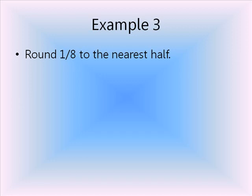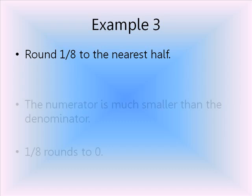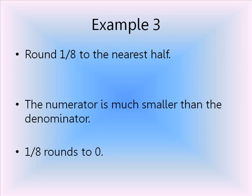Finally, let's round 1-8ths to the nearest half. In this case, the numerator is not close to the denominator at all. 1 is very far from 8, in fact it's not even close to half of 8. Because of this difference, 1-8ths is going to round to 0.